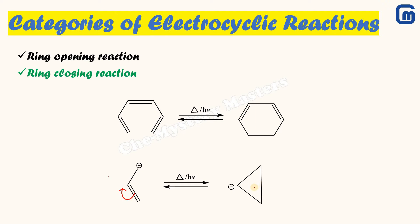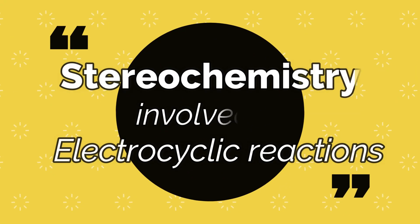The reverse reaction can also occur: the sigma bond in the cyclic product can break on either side, causing one carbon to acquire a negative charge and the other a positive charge, regenerating the double bond and returning to the reactant. This demonstrates how both ring closing and ring opening reactions can occur in electrocyclic reactions, and both can take place in the presence of heat or light.